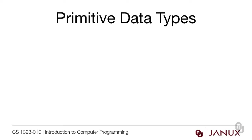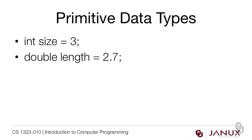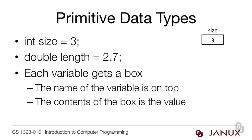Let's talk a little bit about primitive data types. When we say int size = 3 or double length = 2.7, each variable is going to get a box. The name of the variable is on top and the contents of the box is the value. So we've got size with its own box and the value is 3 because that's how we assigned it. Length is a double and its value is 2.7. This is how you draw primitive data types in a memory diagram.